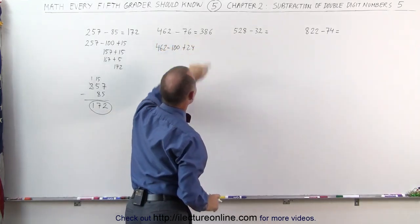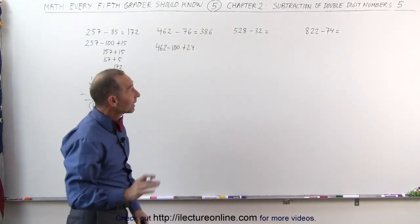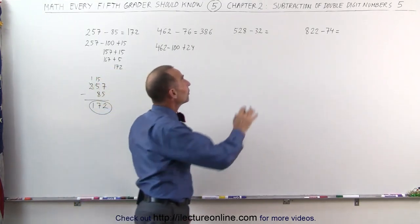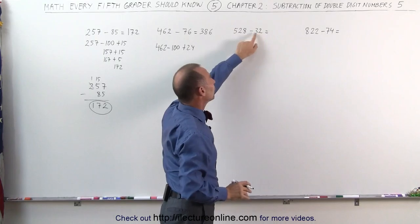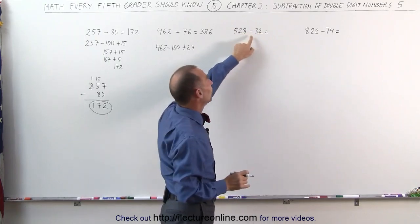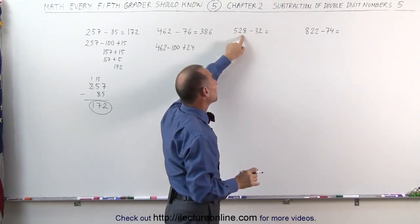The answer is 386. 462 minus 76 is 386. Kind of nice method. Same over here, but slightly different, because here 32 and 28 are almost the same number. 32 is just 4 bigger than 28.